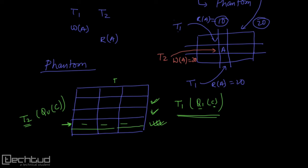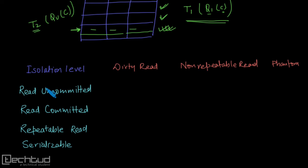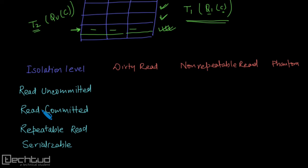Now let's see for which isolation level which violations are allowed. These are the isolation levels: read uncommitted, read committed, repeatable read, and serializable. It is clear from the name that read uncommitted allows reading uncommitted values. Read committed does not allow uncommitted data to be read — it allows only committed data to be read.